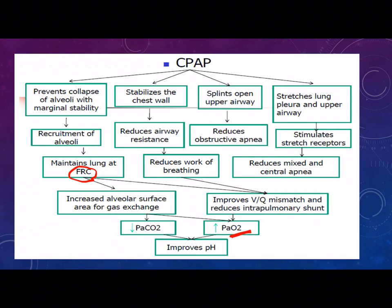CPAP also has a mechanical effect by splinting and stabilizing the chest wall and airway. Both of these decrease the work of breathing, decrease airway resistance, and prevent obstructive apnea. When the CPAP pressure reaches the alveoli, it stimulates the stretch receptors present in the pulmonary system. Stimulation of these receptors stimulates the stretch reflex through the respiratory center, regulating and initiating breathing, and decreasing the frequency of central apnea.